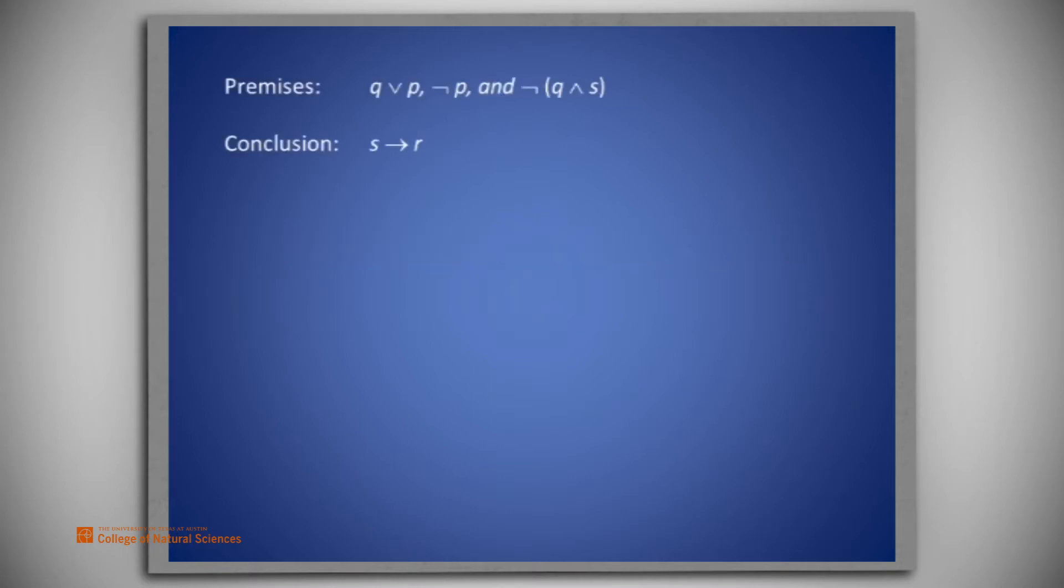The premises that we will be considering in this problem are Q or P together with not P and the negation of the conjunction of Q and S. The conclusion we seek is S implies R.